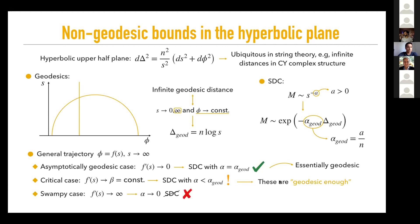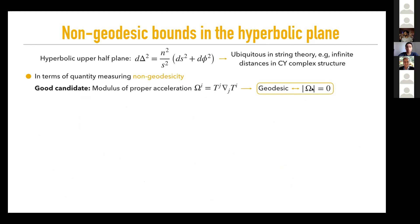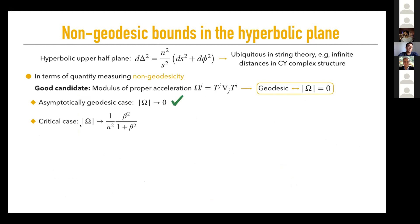We want to quantify this by something that measures how non-geodesic the trajectories are. A good candidate is the modulus of the proper acceleration, since being geodesic means this proper acceleration vanishes. We find that the asymptotically geodesic case has vanishing proper acceleration in the limit, and the critical case goes to some value depending on beta. We can rewrite the factor nu — comparing alpha for the geodesic with alpha for the non-geodesic — purely in terms of how non-geodesic the trajectory is, which was our aim.